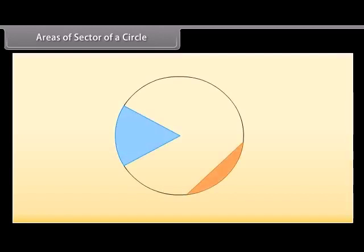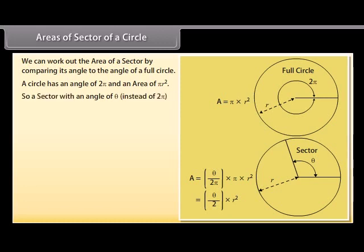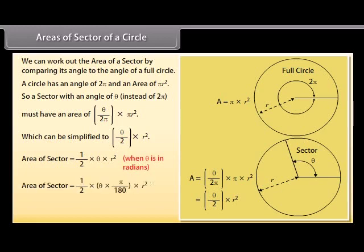There are two main slices of a circle. The pizza slice is called a sector, and the slice made by a chord is called a segment. We can find the area of a sector by comparing its angle to the angle of a full circle. A circle has angle 2π and area πr². So a sector with angle θ has area (θ/2π) × πr², simplified to (θ/2)r². Area of sector equals ½θr² when θ is in radians, or ½ × (θ × π/180) × r² when θ is in degrees.